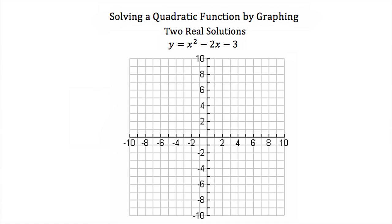Here we have y is equal to x squared minus 2x minus 3. Now, if I wanted to find the zeros or the roots, or I wanted to solve this quadratic function, I could graph it. The first step to graphing a quadratic is to find its axis of symmetry.